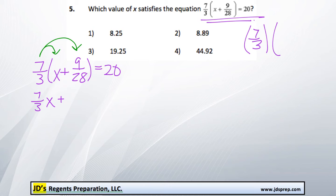So we need to do 7 thirds times 9 over 28. We can make that become a 3. So it's 21 over 28 equals 20.